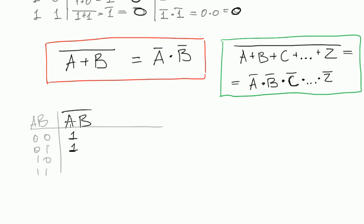Then next one is 0 multiplied by 1 is 0, negated will be 1. Then 1 multiplied by 0, negated is 1. Then 1 by 1 negated is 0.